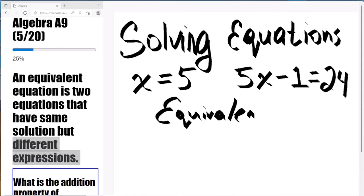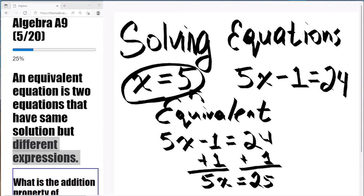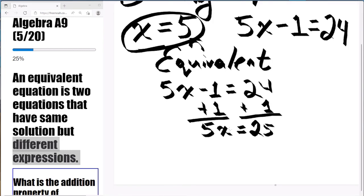So is this an equivalent equation? Yes, it is. Because when we plug in 5 into 5x minus 1, it'll give us 24. 24, as you can see here, 5x minus 1 equals 24.